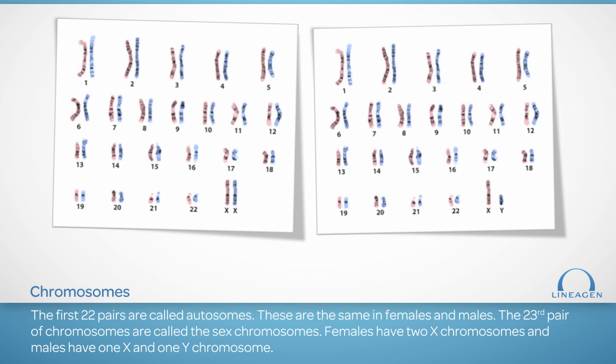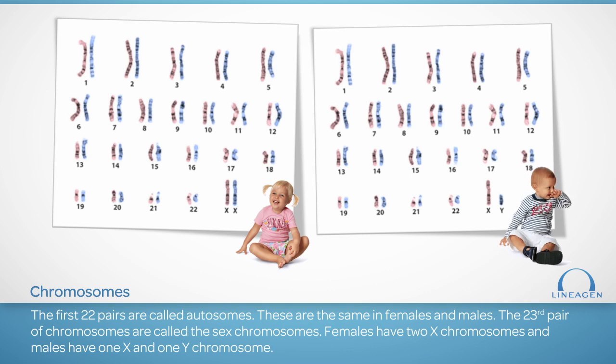The first 22 pairs of chromosomes are called autosomes. These are the same in females and males. The 23rd pair of chromosomes are the sex chromosomes. Females have two X chromosomes and males have one X and one Y chromosome. The genetic information provided by the sex chromosomes determines a person's gender.